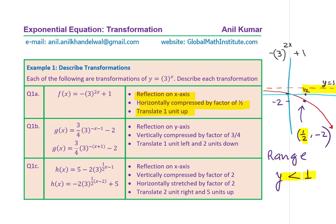I thought it important to review these concepts before going further. The answers for the rest of them are given here, and we will go through the next and see what are the critical points we should understand while moving forward with transformations. So, to summarize question 1a: f(x) equals minus 3 to the power of 2x plus 1 — minus means reflection on the x-axis; 3 to the power of 2x means horizontally compressed by a factor of half; and plus 1 means translated 1 unit up.